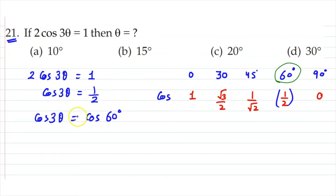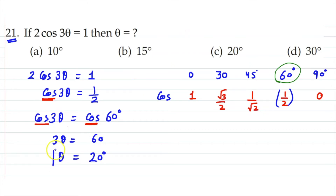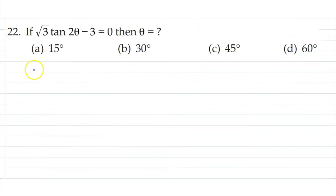I hope the concept is clear. Whatever trigonometric ratio is given, find the same value in that row of the table. Here 1/2 is the value of cos 60°, so 3θ equals 60°. Removing cos from both sides, theta equals 60 divided by 3, which is 20 degrees. Option C is correct.